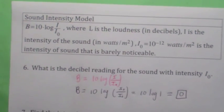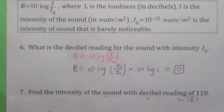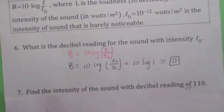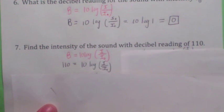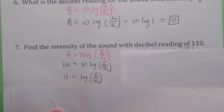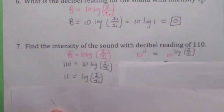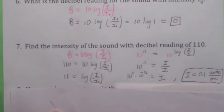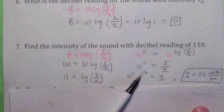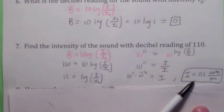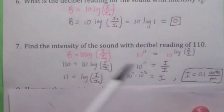If you're given the decibel reading of 110, what would the intensity be? You set the decibel reading equal to 110. Before you raise 10 to each side, divide by 10 first — you get 11 equals log of I over I0. When you raise 10 to each side, you get 10 to the 11 equals I over I0. Remember, I0 is 10 to the negative 12. So when you multiply both sides by I0 and add the exponents, you get 10 to the negative 1 — that's one-tenth watts per meter squared.